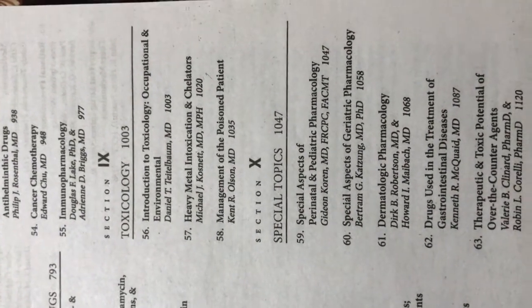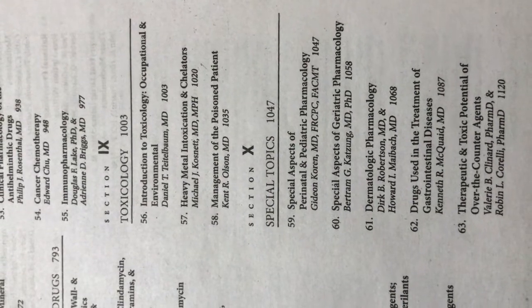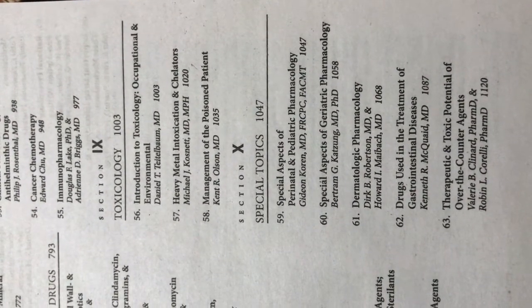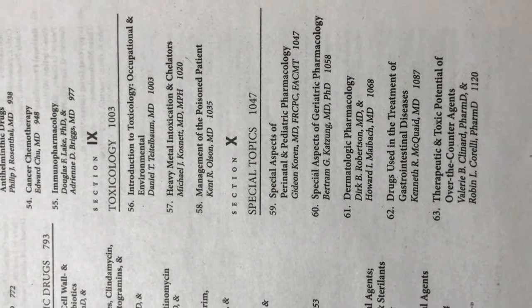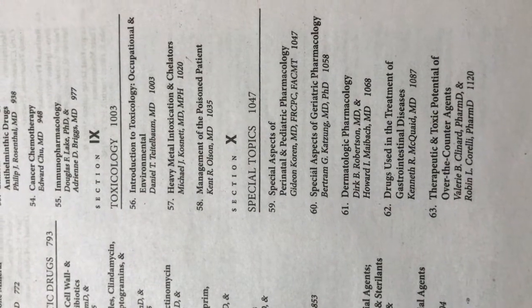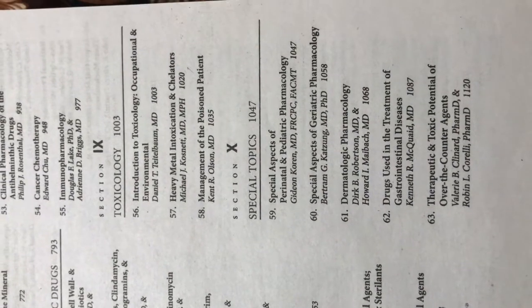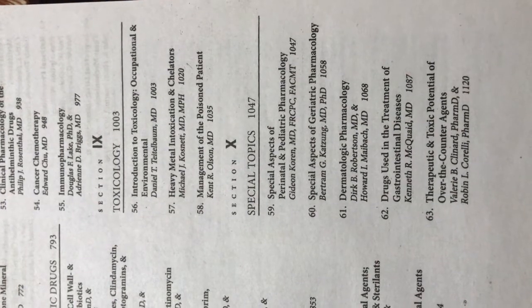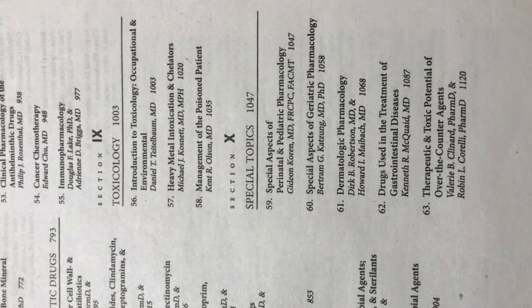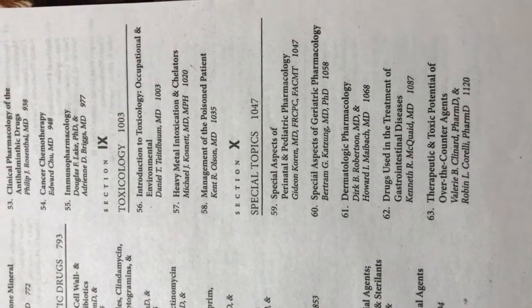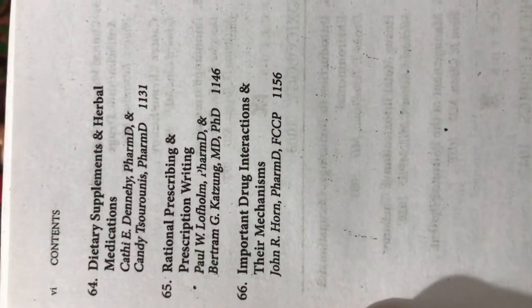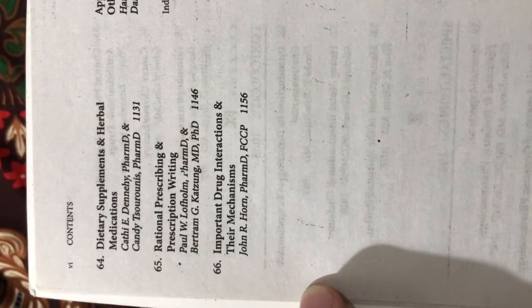Section nine covers toxicology: chapter fifty-six introduction to toxicology, occupational and environmental toxicology, fifty-seven heavy metal intoxication and chelators, and fifty-eight management of the poisoned patient. Section ten covers special topics: chapter fifty-nine special aspects of perinatal and pediatric pharmacology, sixty special aspects of geriatric pharmacology, sixty-one dermatologic pharmacology, sixty-two drugs used in treatment of gastrointestinal diseases, and sixty-three therapeutic and toxic potential of over-the-counter agents.